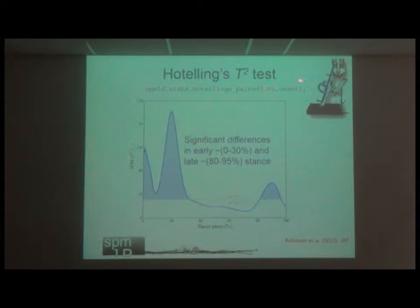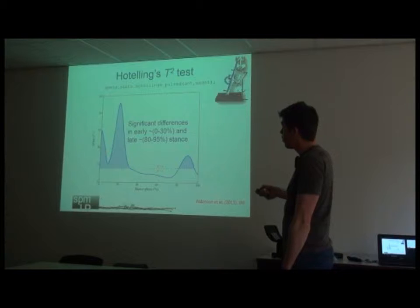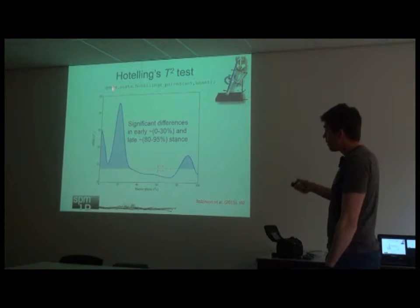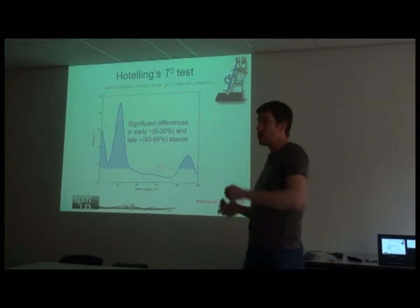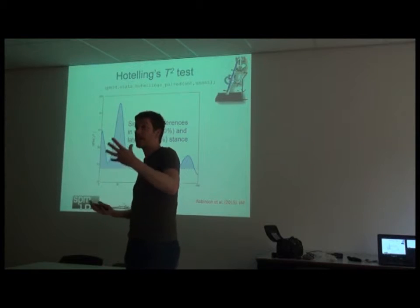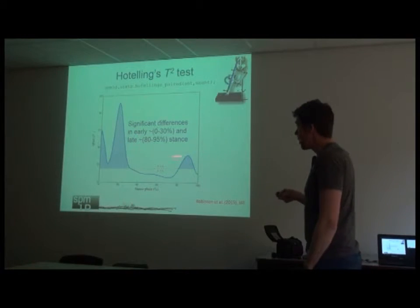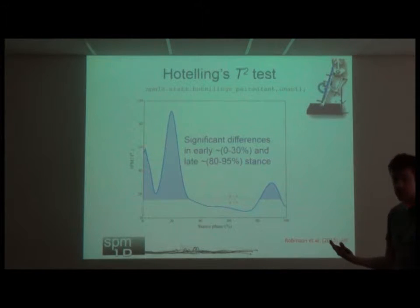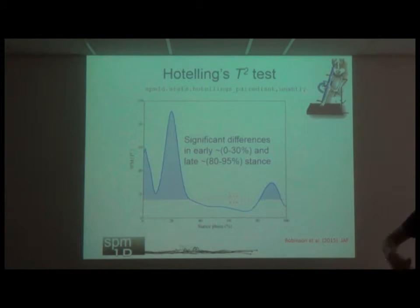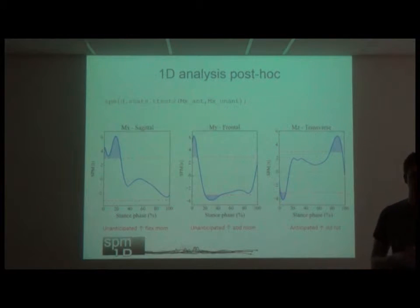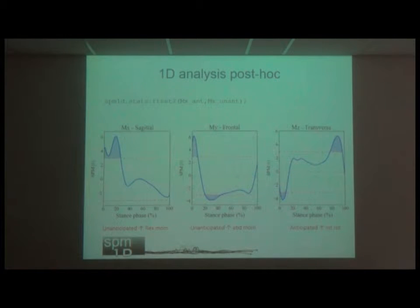We should take that covariance into account when we analyze our data. Here is an example of comparing two conditions where we have done what we would call a Hotelling's t-test — a vector test. We calculate our t-curve in the same way for comparing those conditions, but now for a vector. We don't have to break them up into individual components; we can see whether the vector justifies rejection of our null hypothesis. Once the hypothesis has been rejected, we can go and look at individual components via post-hoc analysis.